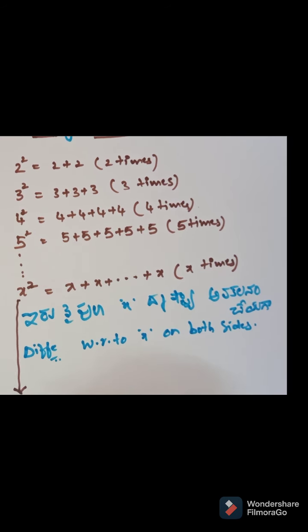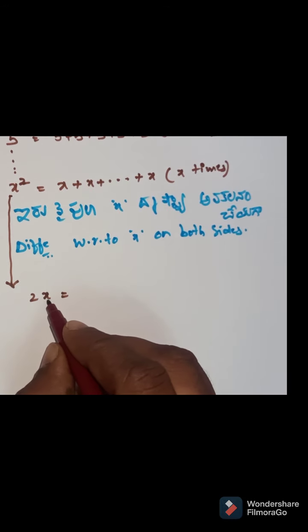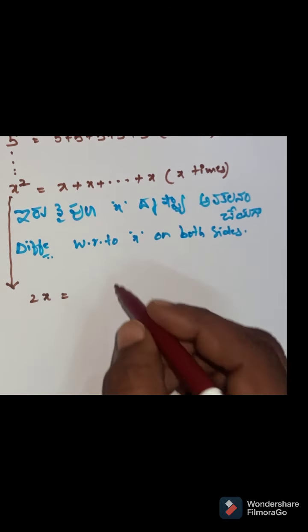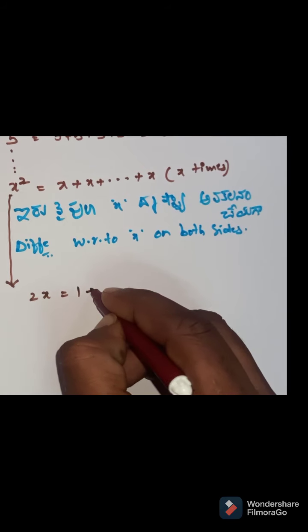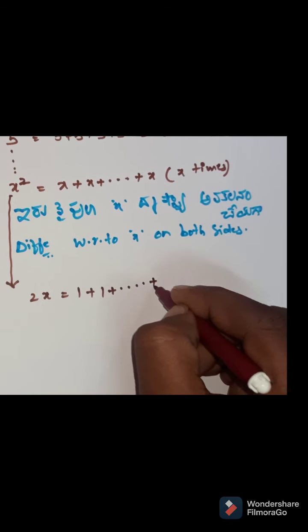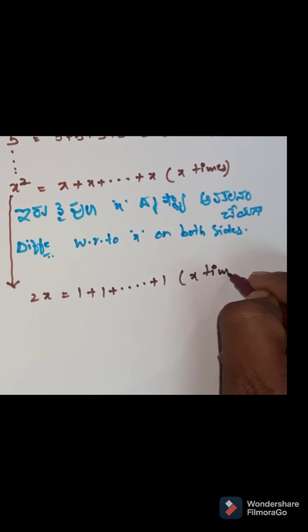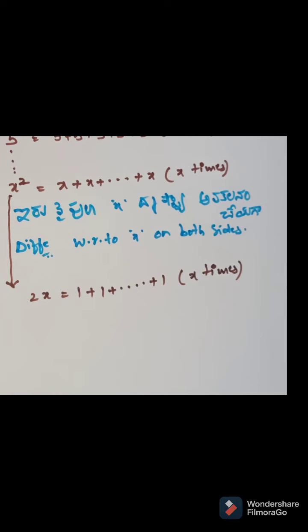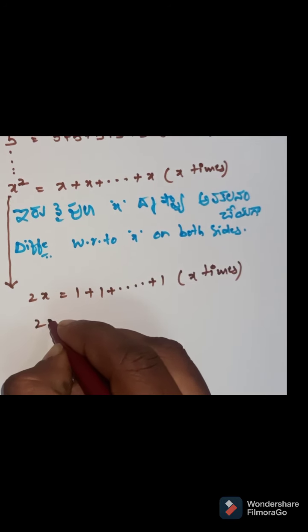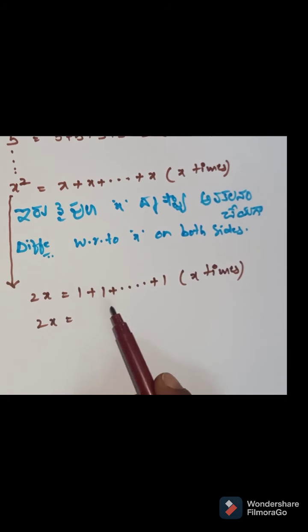So we have X added X times is equal to X square. I can differentiate. This means 2X is equal to...